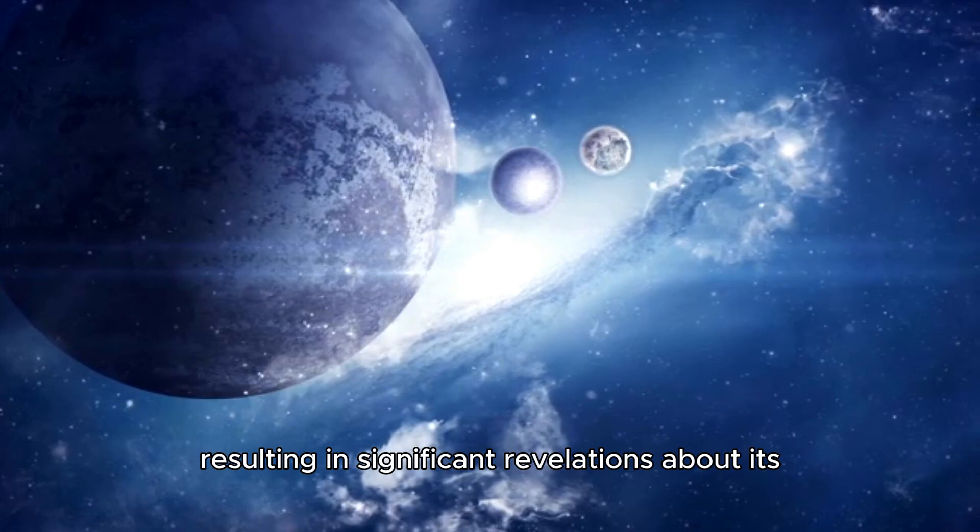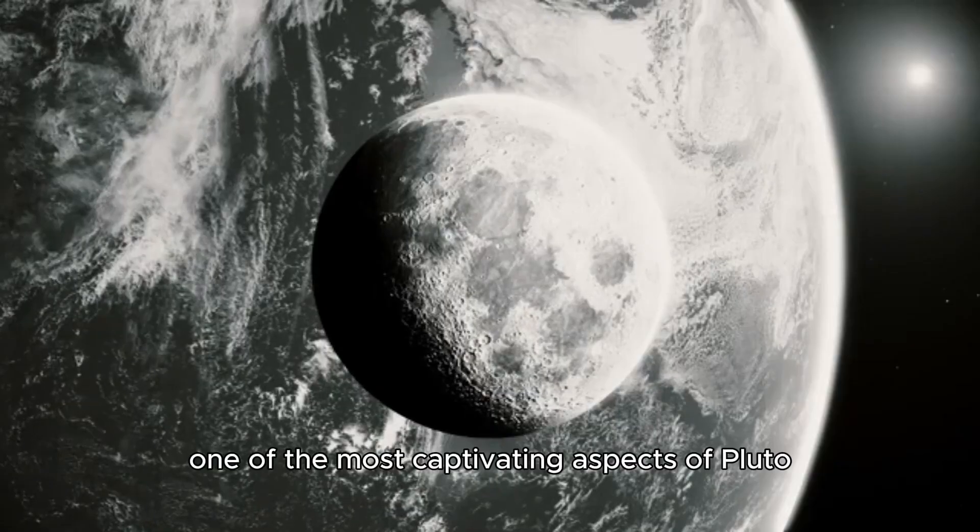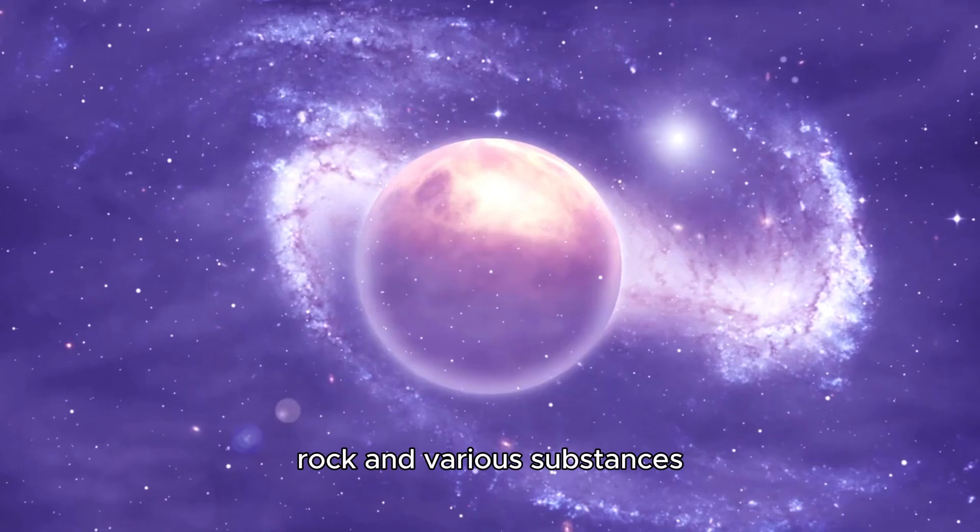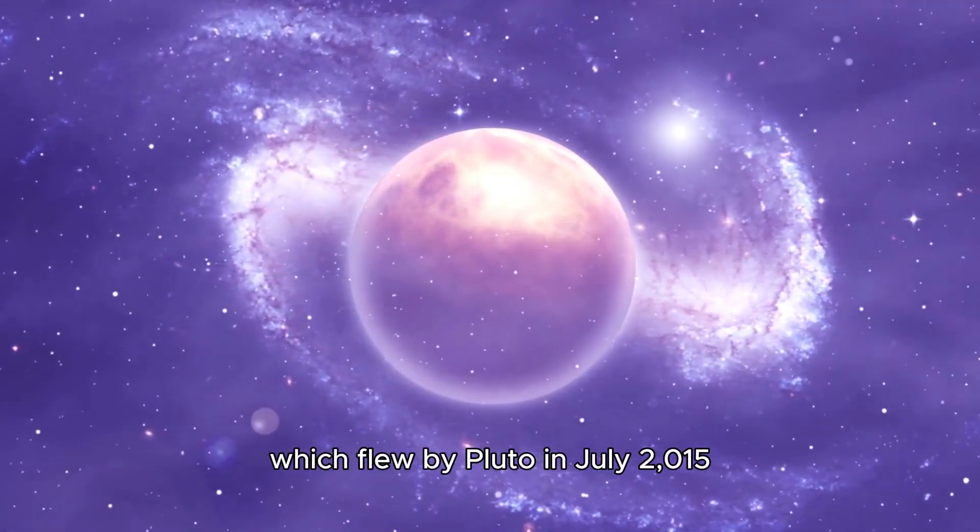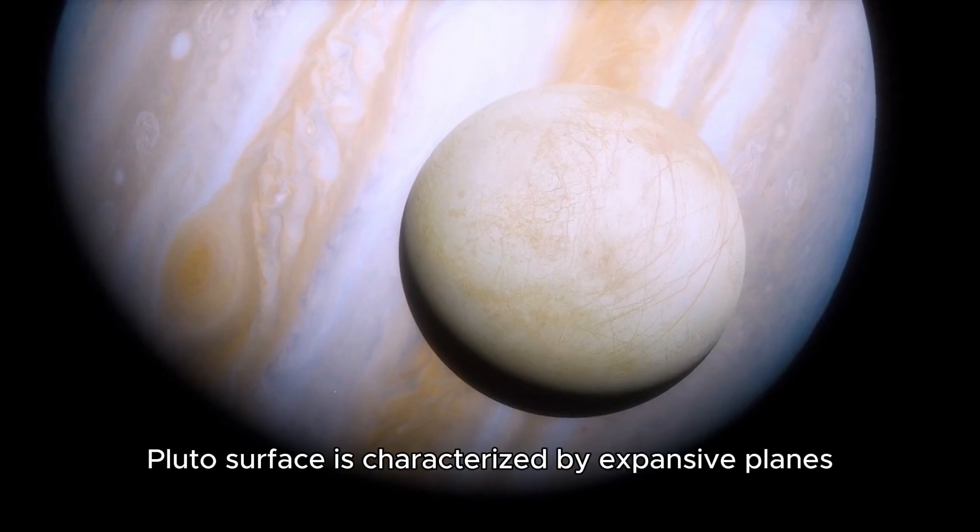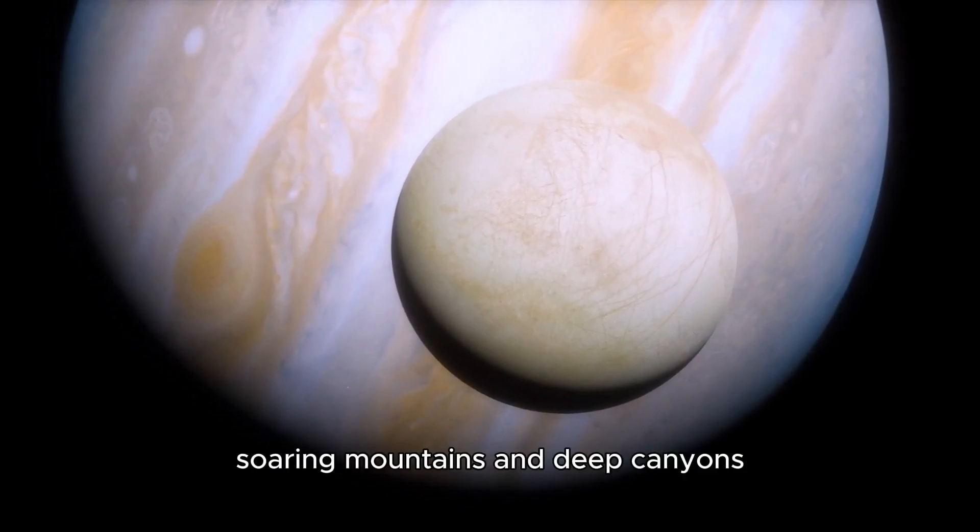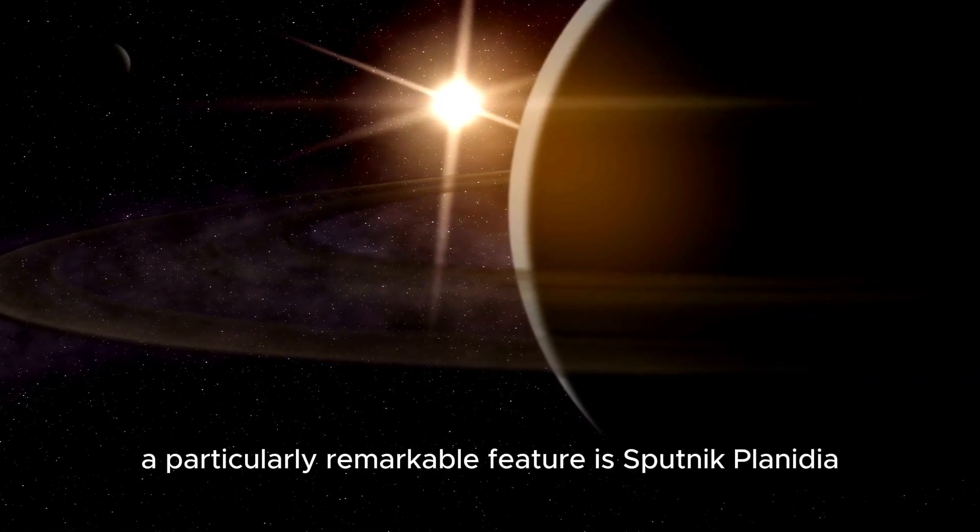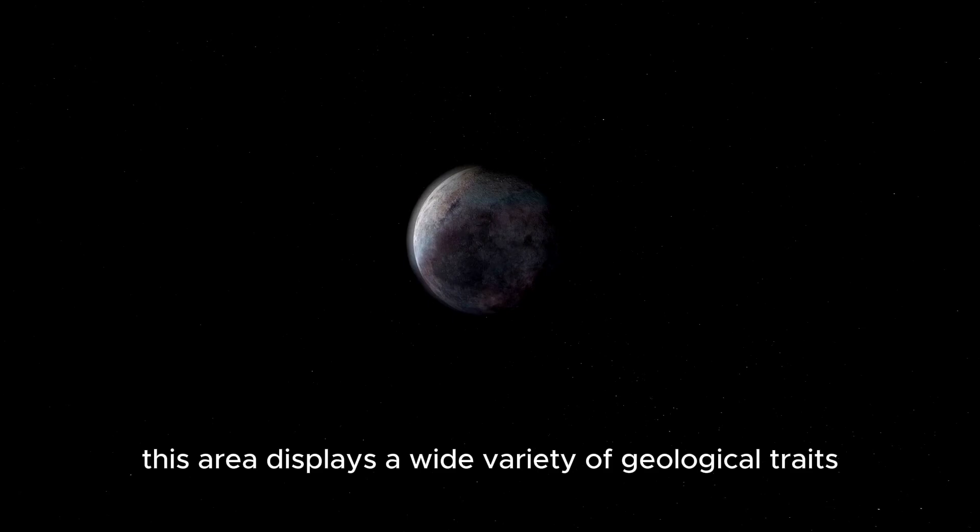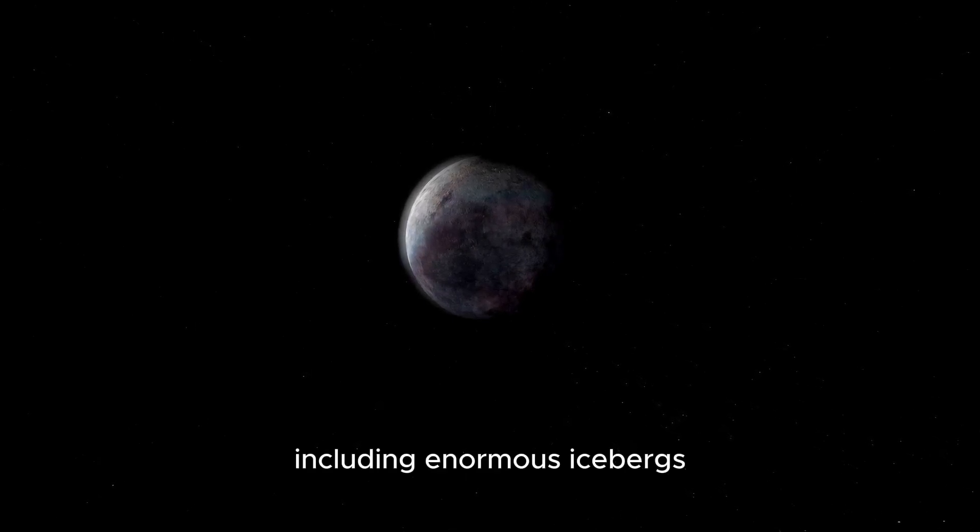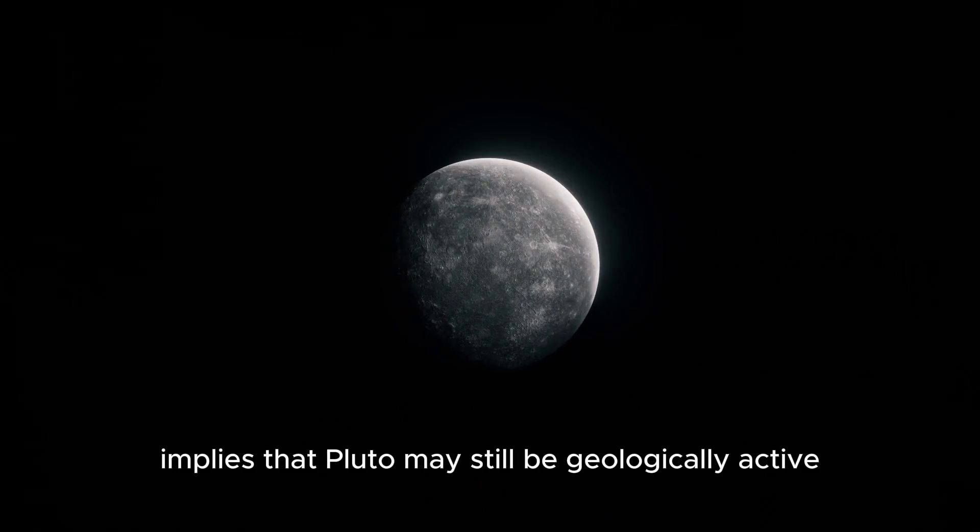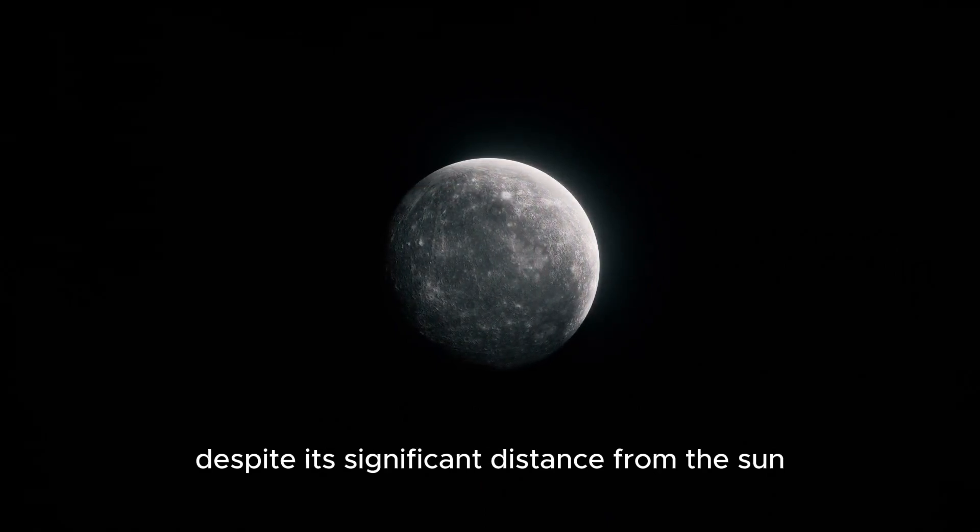One of the most captivating aspects of Pluto is its exterior, which is a complex patchwork of ice, rock, and various substances. The New Horizons mission, which flew by Pluto in July 2015, delivered unparalleled insights into this remote world. Pluto's surface is characterized by expansive plains, soaring mountains, and deep canyons. A particularly remarkable feature is Sputnik Planitia, a vast heart-shaped plain primarily composed of nitrogen ice. This area displays a wide variety of geological traits, including enormous icebergs and what appear to be flowing glaciers. The existence of these characteristics implies that Pluto may still be geologically active despite its significant distance from the sun and frigid temperatures.